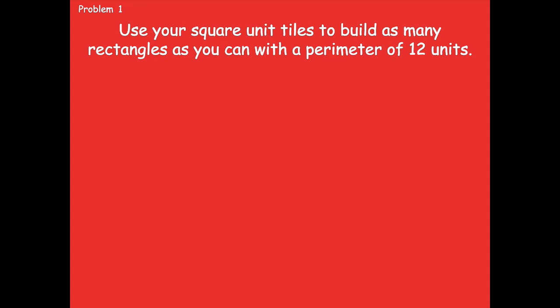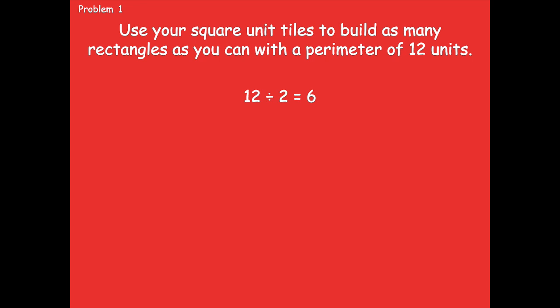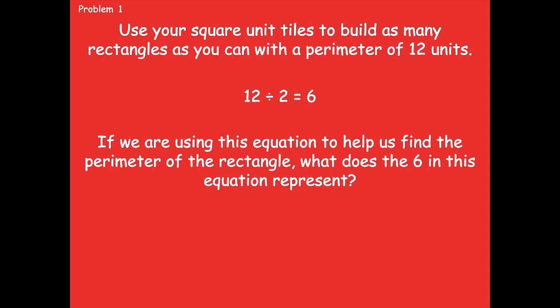The problem asks us to use unit squares to build as many rectangles as we can with a perimeter of 12 units. We know that the perimeter of 12 units is double the sum of the width and the length. What's the opposite of doubling a number? It's dividing by 2, or halving it. So 12 divided by 2 equals 6. Using this equation, what does the 6 represent?